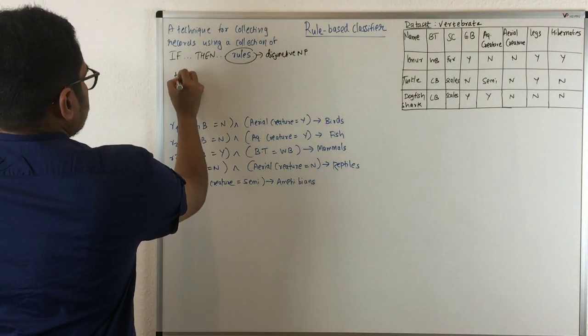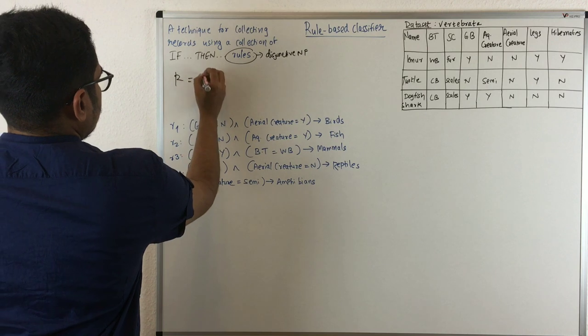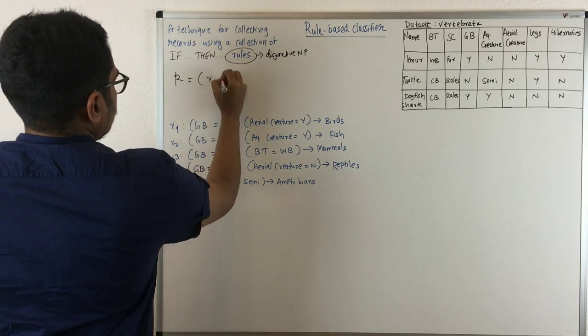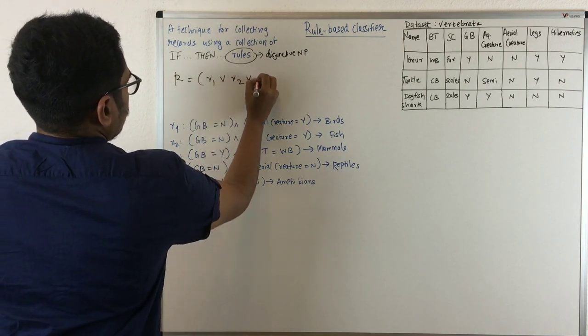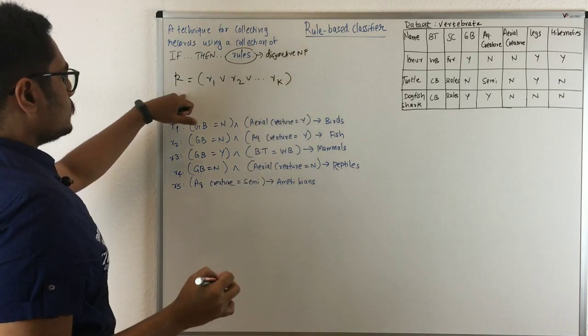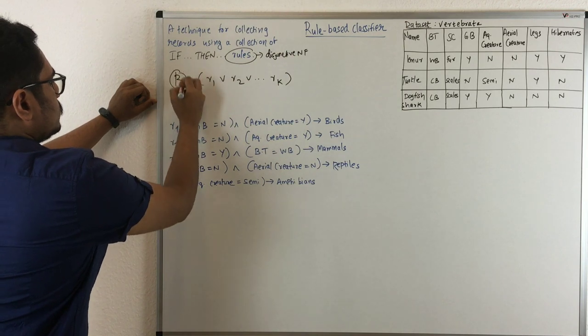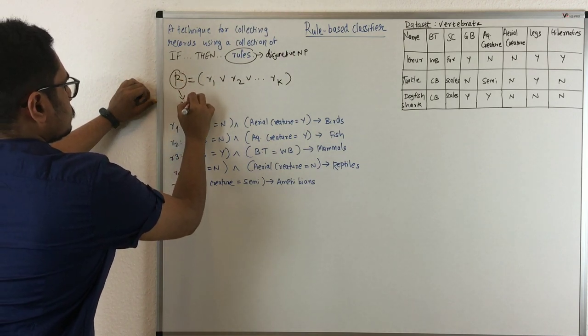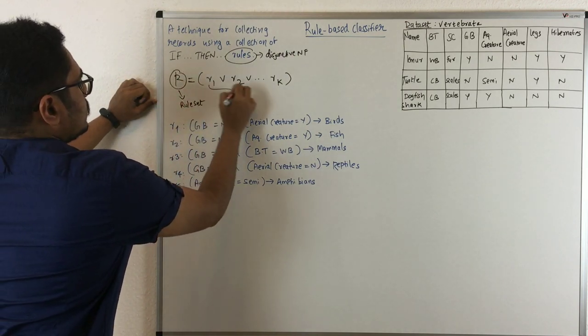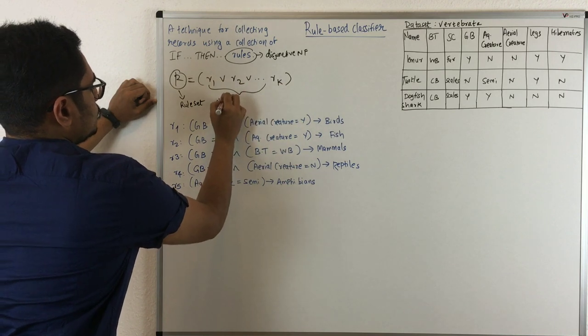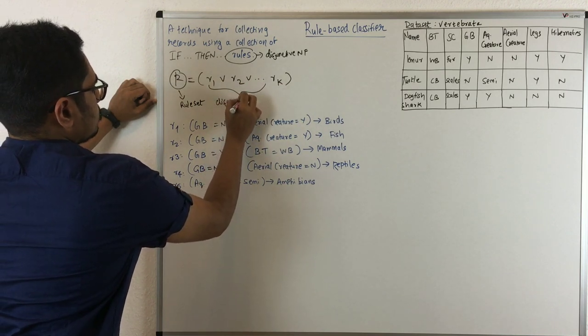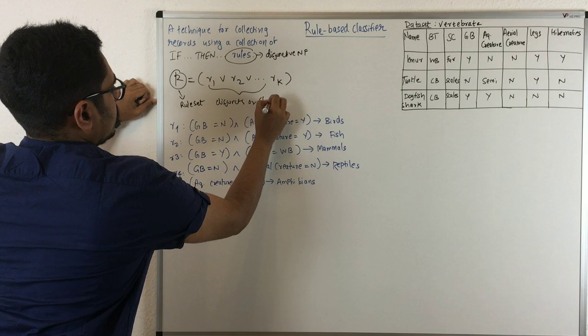Consider R equals rule one OR rule two OR rule K. This is basically how it looks. What you can see is called a rule set, and these things are called disjuncts or classification rules.